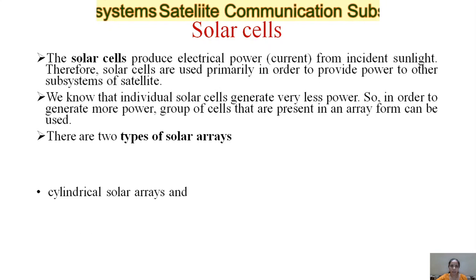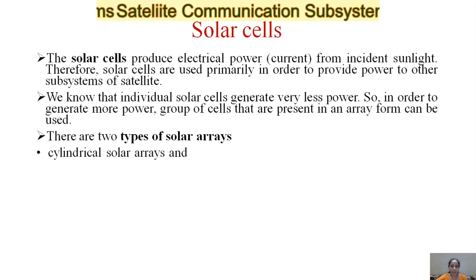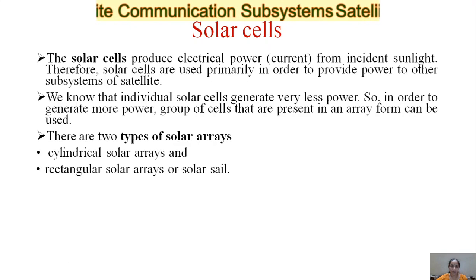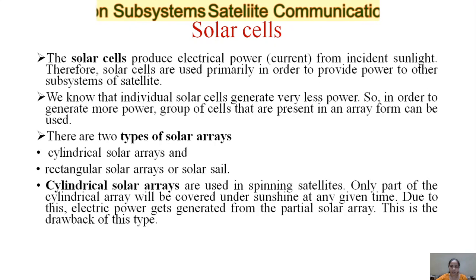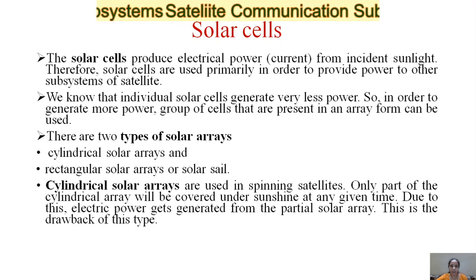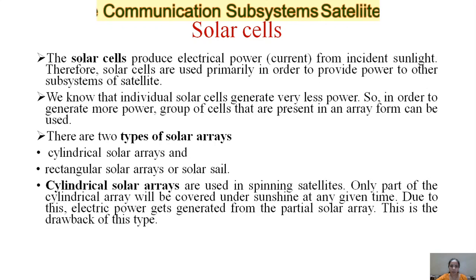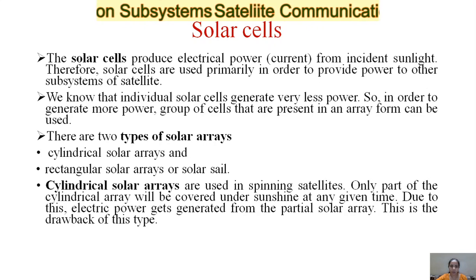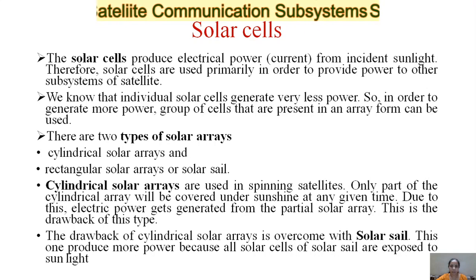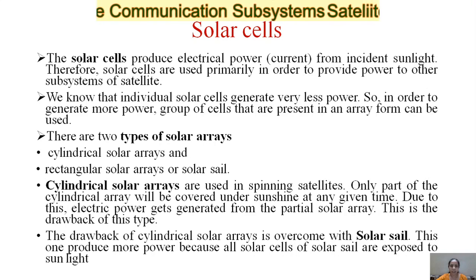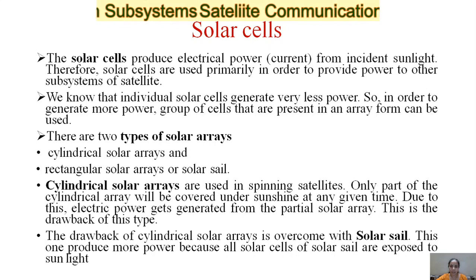There are two types of solar arrays: cylindrical solar arrays and rectangular solar arrays. Cylindrical solar arrays are used in spinning satellites; only part of the cylindrical array will be covered by sunshine at any given time, so electrical power is generated from the partial solar array only. This drawback of cylindrical solar arrays is overcome with rectangular solar arrays, which produce more power because all solar cells are exposed to sunlight.